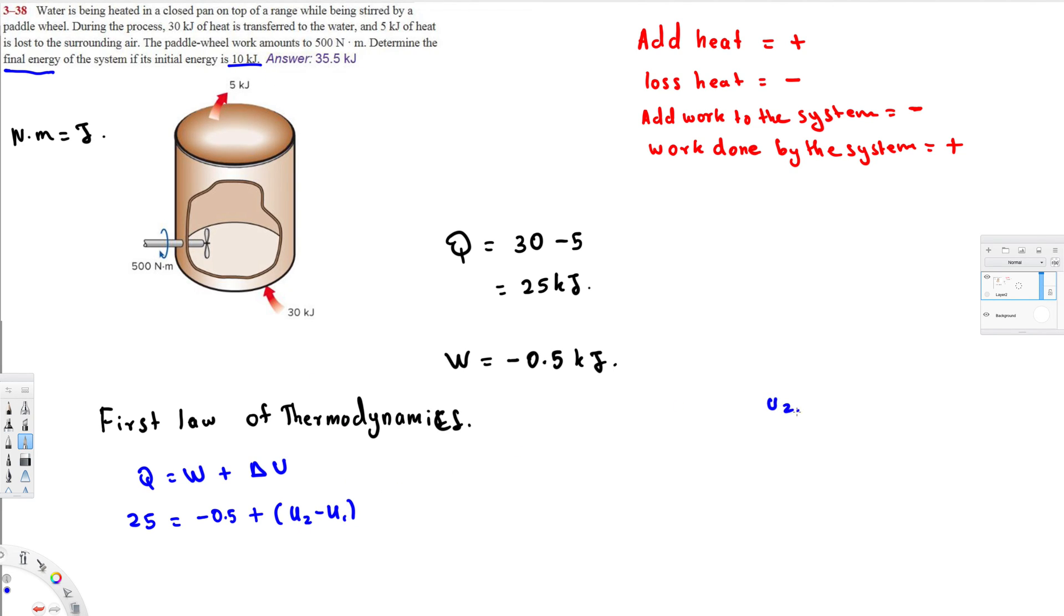And finally U2 is what we're trying to find. Let's calculate these values. Let's bring this one to the other side, so this is going to become 25.5 equal to U2 minus 10, and therefore U2 is equal to 35.5.